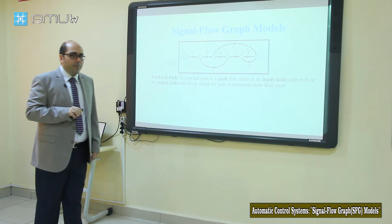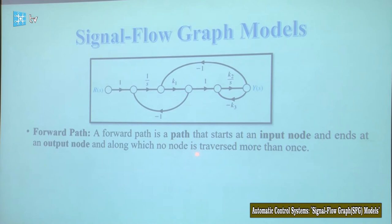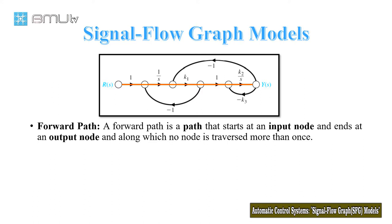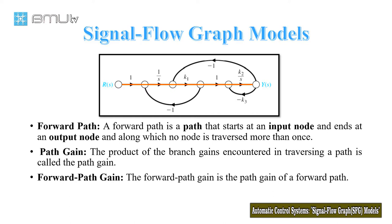What is the forward pass? The forward pass is a path that starts at an input node and ends at an output node, along which no node is traversed more than once. For example, this path is a forward pass — it starts with the input node and goes to the output node, and all nodes through this path are traversed exactly one time.